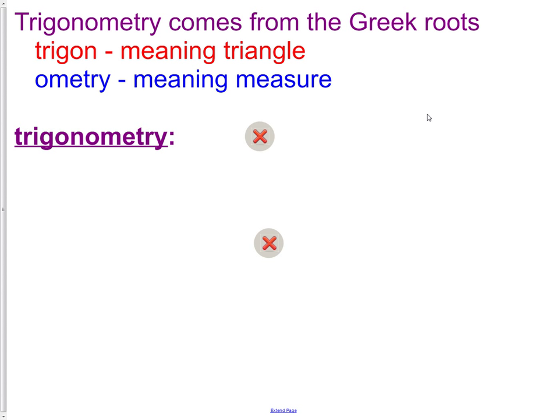Trigonometry comes from the Greek roots trigon, which means triangle, or trigon, which means triangle, andometry, which means measure. So we're talking about measurements of triangles.